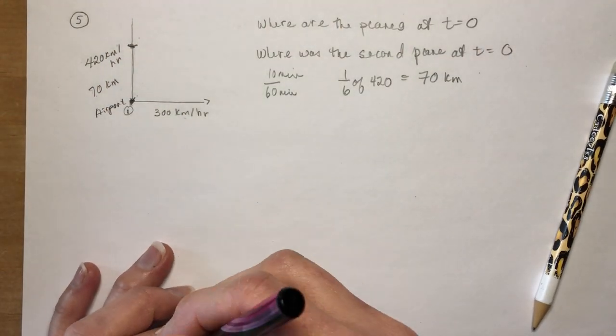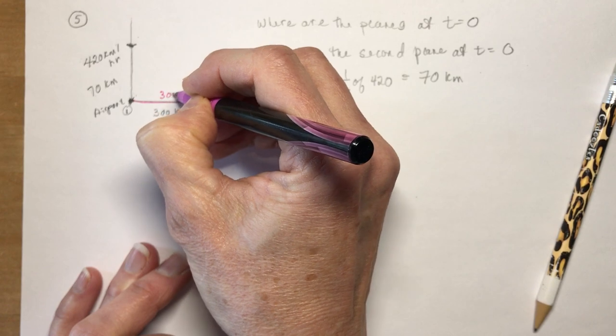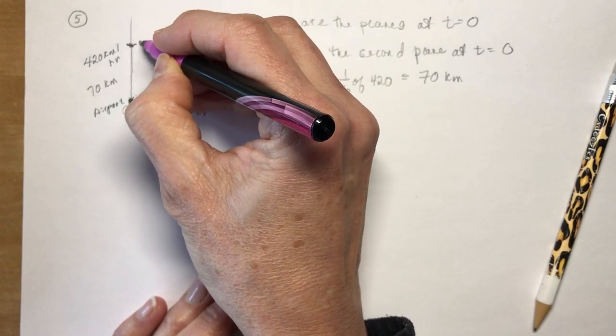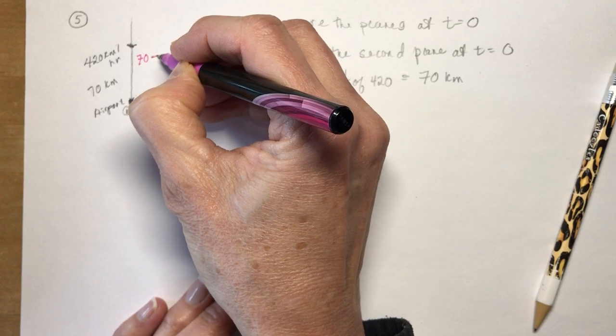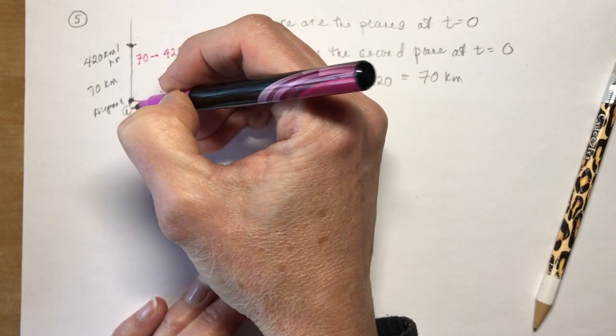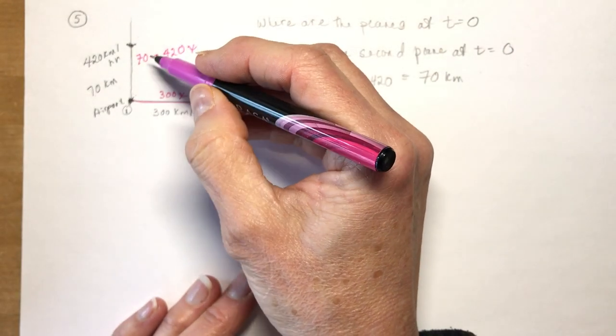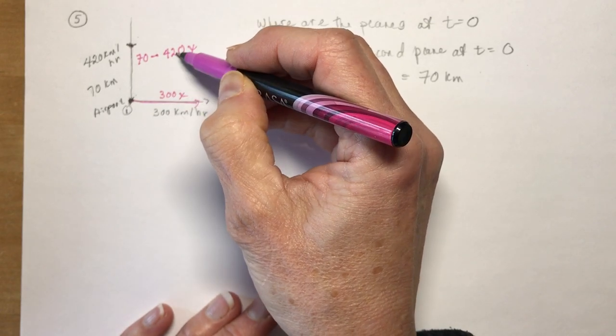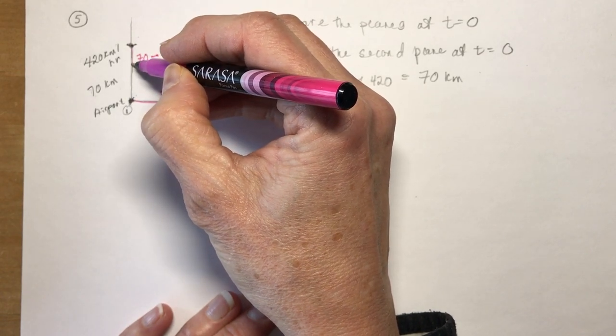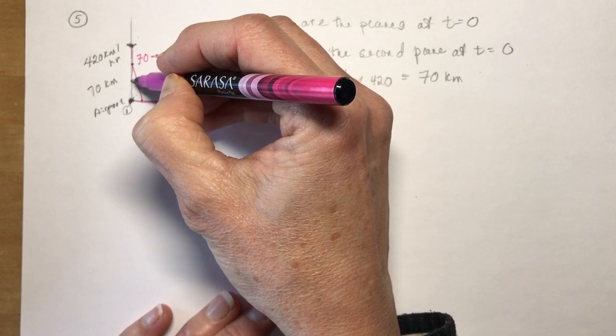So that means that as this plane, the first plane, goes this way its distance is going to be 300x where x is the number of hours. The other plane starts at 70 kilometers and we're going to subtract its distance of 420x. So that's going to be this distance. So at time zero they were 70 kilometers apart and hopefully we can find a point where they were closer than that. And that should be true because this plane is traveling slower than this plane. So as this starts out the distance is here and then this one's going a little faster. So let's say it came down this far and this one would only be this far away.